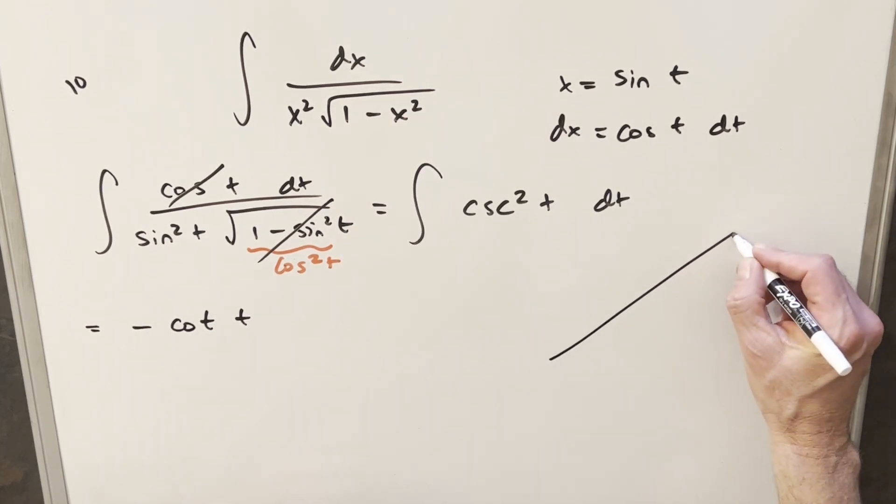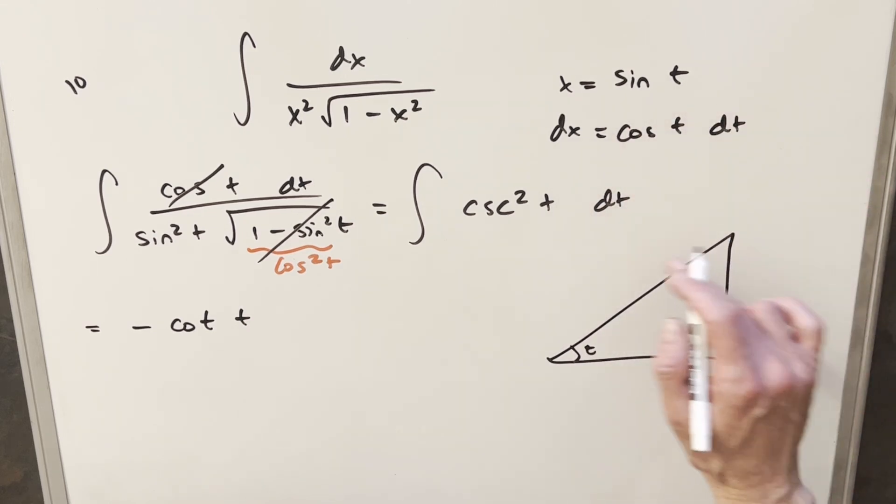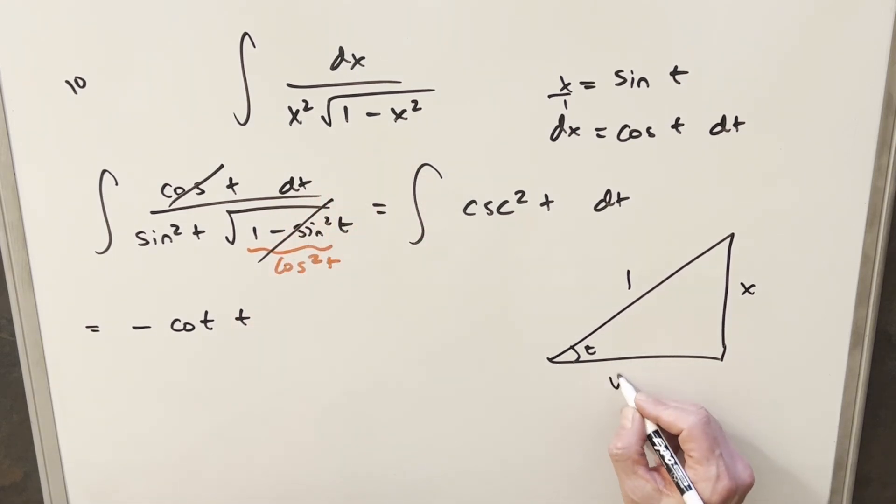What I can do then is draw my triangle. We're going to do this. The angle is going to be t. Sine of t is going to be opposite over hypotenuse. We can write this as x over 1. So we can make this side x, this side 1. Then using Pythagorean theorem, or I could just look around and see they have a 1 minus x squared here. This third side is going to be square root of 1 minus x squared.